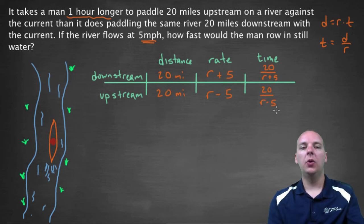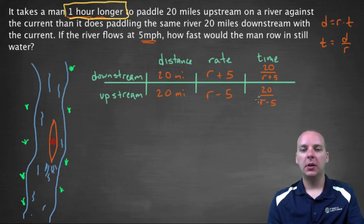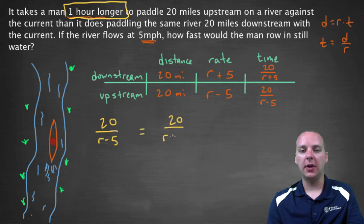Now what do we do with it? Well, we have to take this word problem here, and somehow make an equation out of all this stuff. Now, now there's one thing I haven't used yet, and that's this 1 hour longer bit. So it says it takes us 1 hour longer going upstream, than it does going downstream. Okay, so let's think about that. So if we have our upstream amount of time, which is 20 over r minus 5, then that amount of time would equal our amount of time going downstream, which was faster by the way, plus another hour.